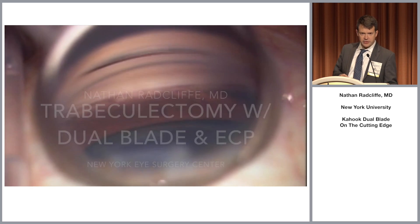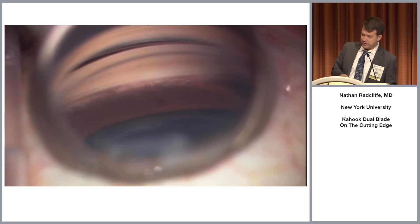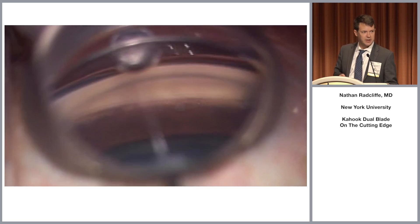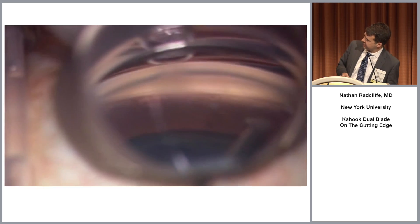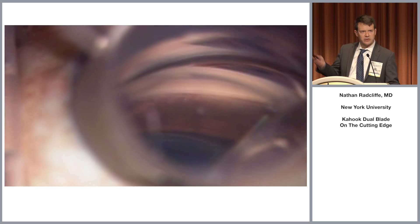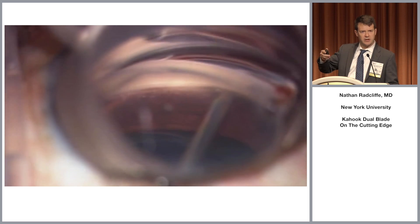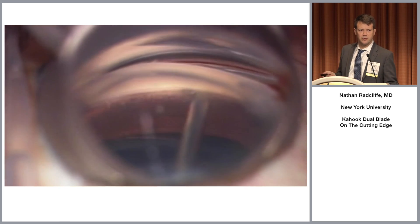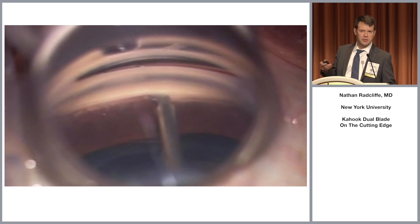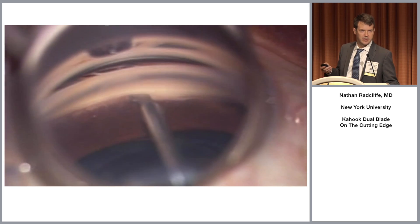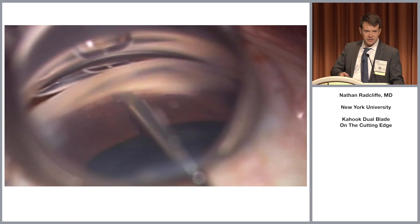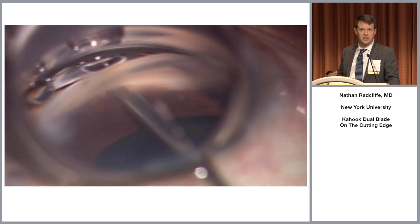We're viewing trabecular meshwork with a deep anterior chamber. It's nice to have good pigment on the trabecular meshwork so you can see your target. We're going to introduce the blade, start on one side of the angle, sweep across, and then come from the other direction. We don't just want to open up the canal — we want to excise the strip of trabecular meshwork. You can really see that the pigmented trabecular meshwork is gone.